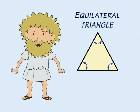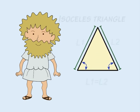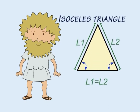An equilateral triangle has three sides that are equal in length and internal angles that all equal 60 degrees. An isosceles triangle has two sides that are equal in length and two equal angles opposite the two equal sides.